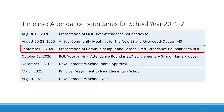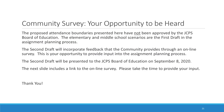The Board will have an opportunity to deliberate the attendance boundaries and a final vote is expected on October 13th. The proposed attendance boundaries presented here have not been approved by the Board of Education. The elementary and middle school scenarios are the first draft in the assignment planning process. The second draft will be presented to the Board of Education on September 8th, 2020.